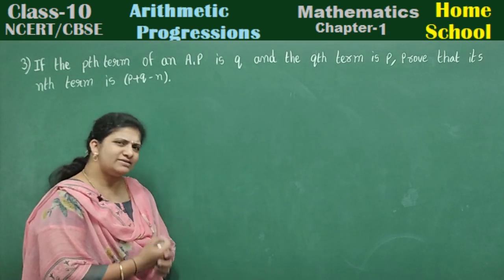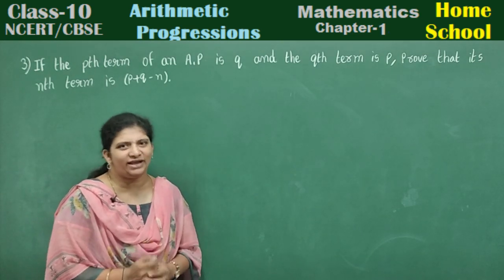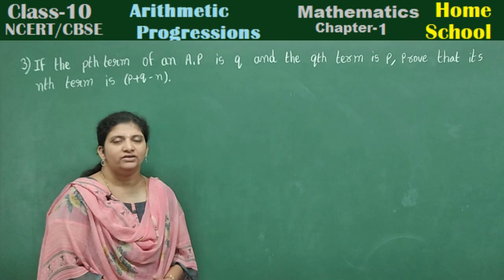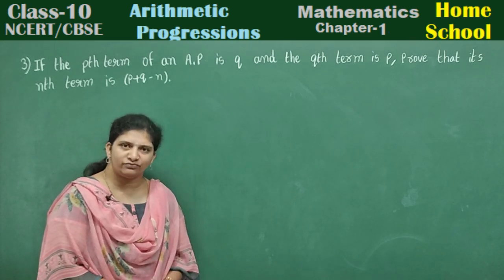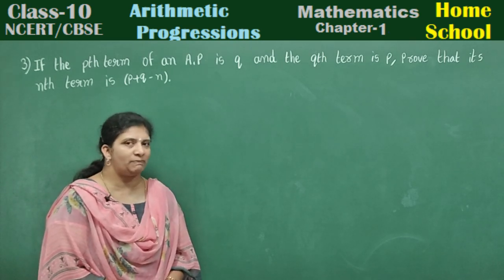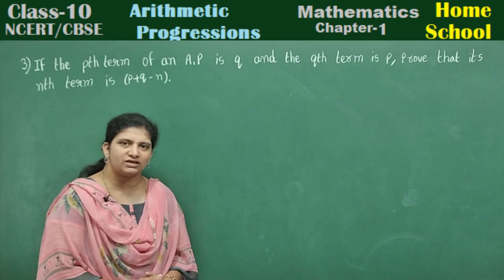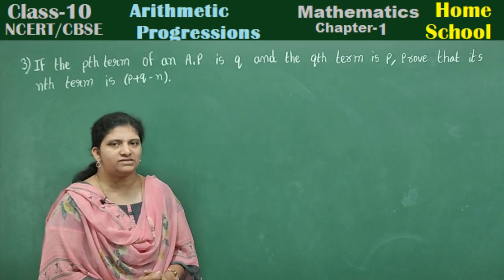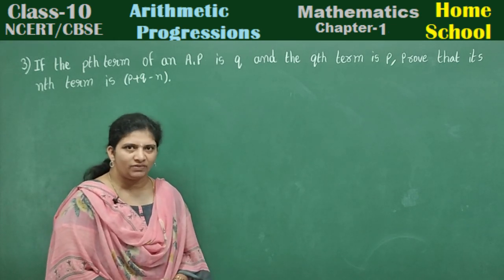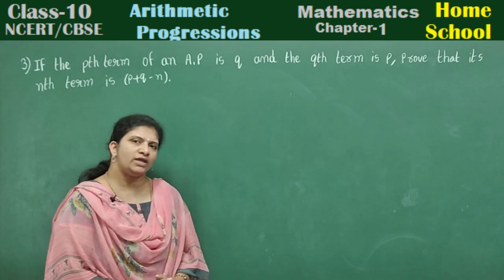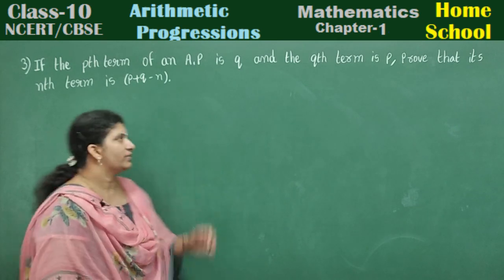Understand the problem? It is very simple if you understand. We should remember the general term formula of an AP: an is equal to a plus n minus 1 into d. If you know that, we can proceed with this problem.